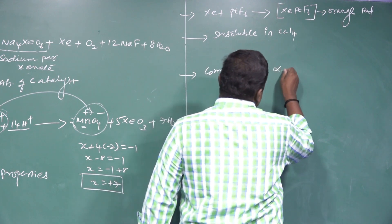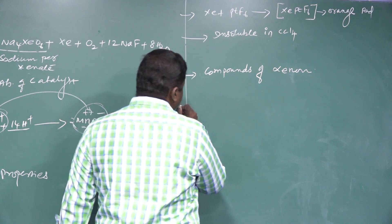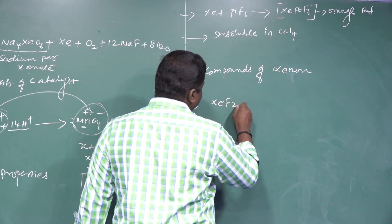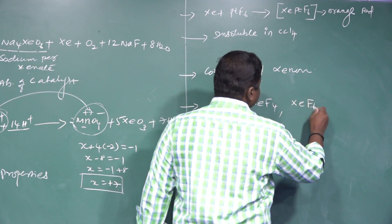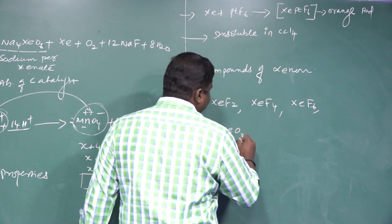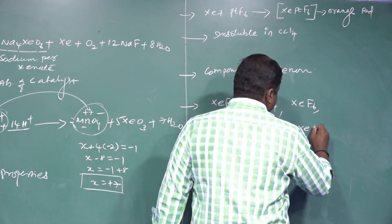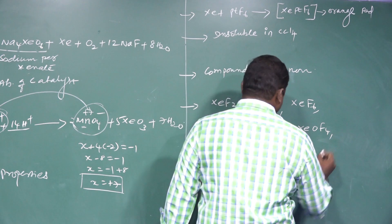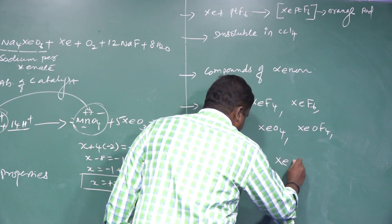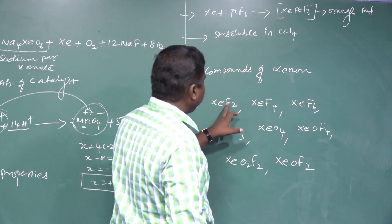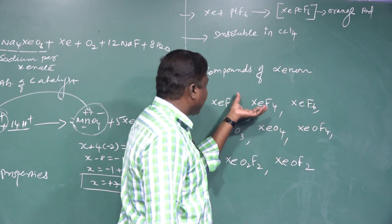Compounds of xenon include: XeF2, XeF4, XeF6, XeO3, XeO4, XeOF4, XeO2F2, and XeOF2 — a total of 8 compounds. We will now discuss each compound of xenon in terms of number of lone pairs of electrons, number of sigma bonds, number of pi bonds, hybridization, and shape.